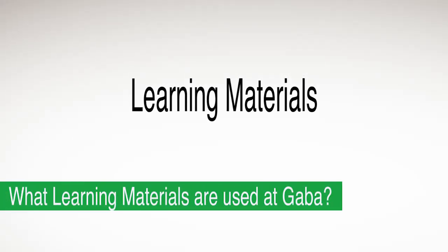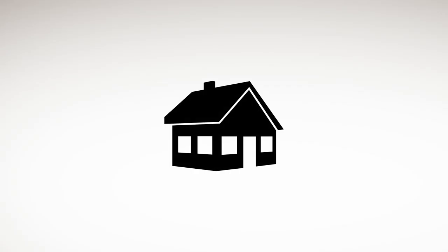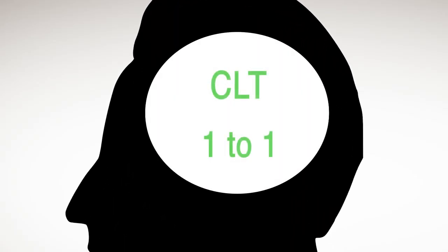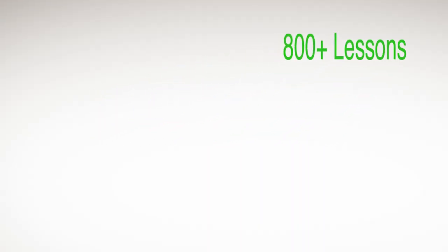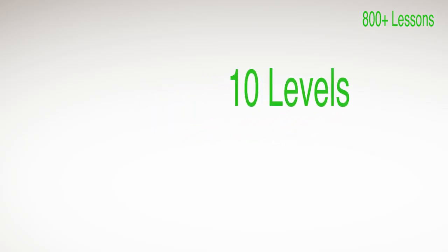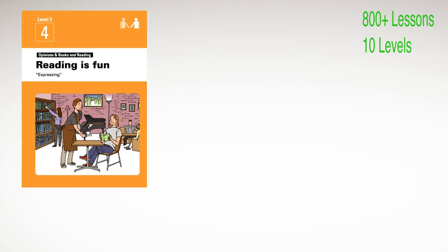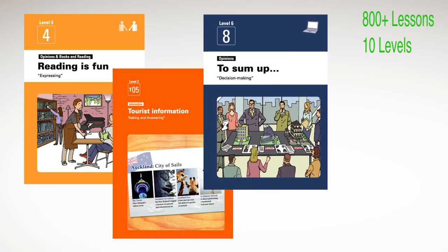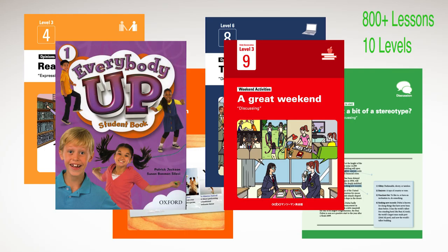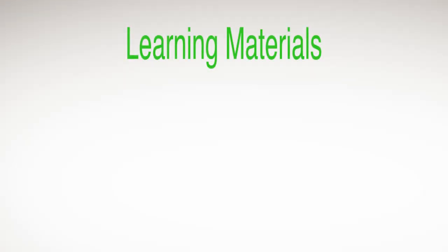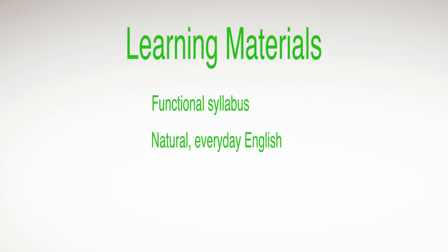Almost all learning materials used at GABA have been created in-house by our academic development team and designed with CLT and one-to-one teaching firmly in mind. While the list is ever-growing, there are currently over 800 different lessons covering 10 different English ability levels with topics focusing on everyday communication, travel, business English, discussions, and more. There are also specialized learning materials for teaching younger clients, children and teenagers. The learning materials themselves are structured around a functional syllabus, the focus being placed on how the language clients are learning can be used in daily life, in situations familiar to them.